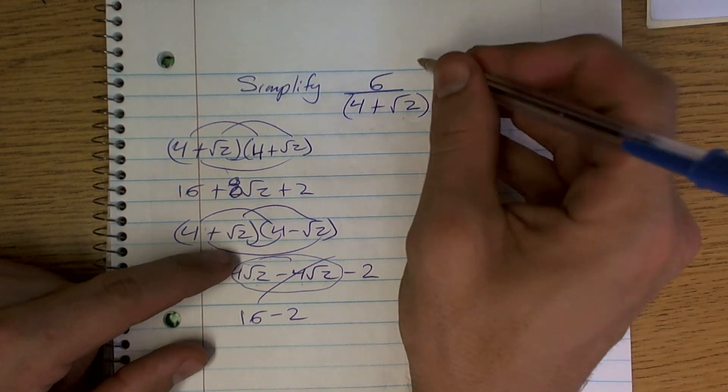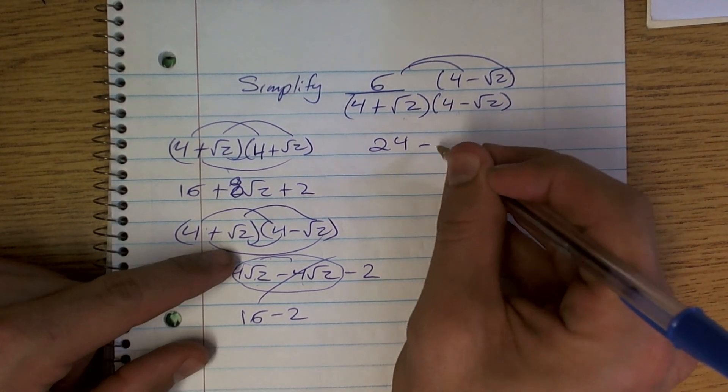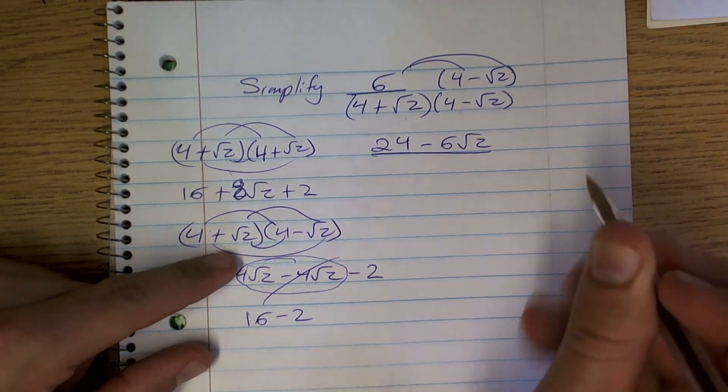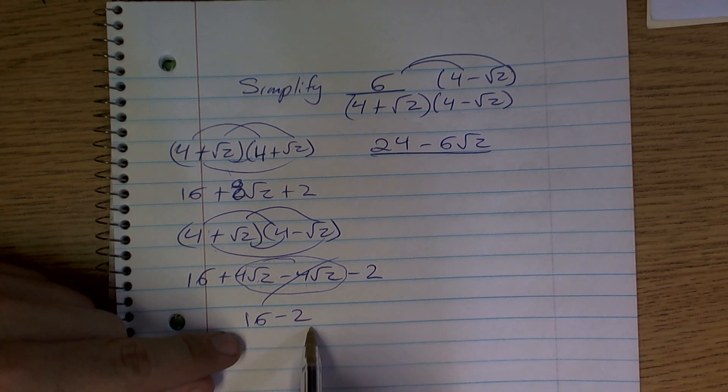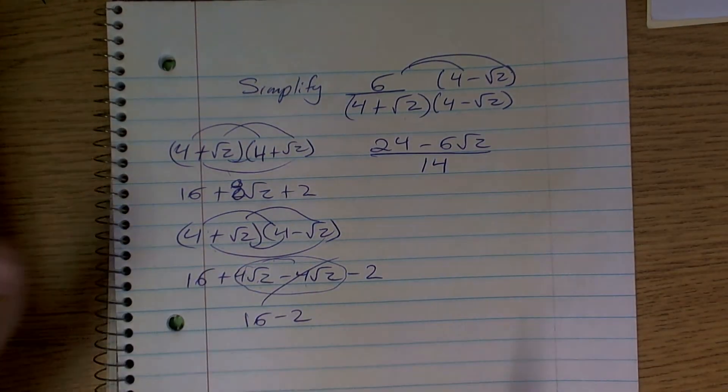So, I just did this and then we need to apply distributive property up top. We get 24 minus 6 radical 2 over 14.